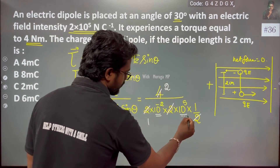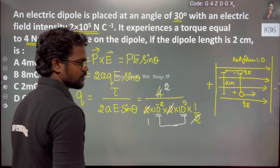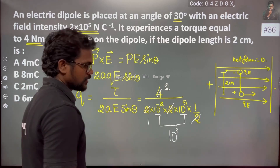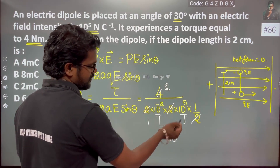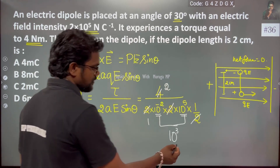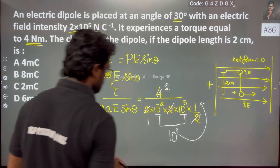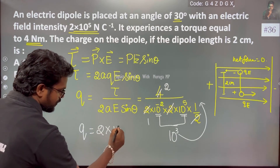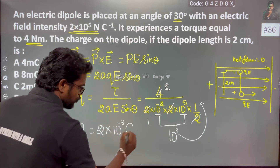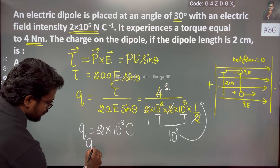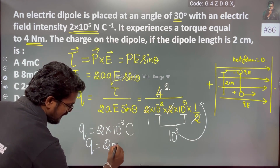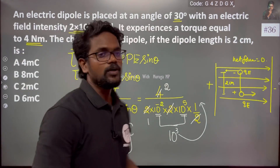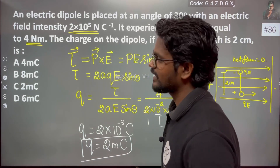10 to the power minus 2 multiplied by 10 to the power plus 5 gives 10 to the power minus 2 plus 5 plus 3, after canceling the 2s. This gives 10 to the power minus 3. So the charge is 10 to the power minus 3 coulombs, which is 1 millicoulomb.